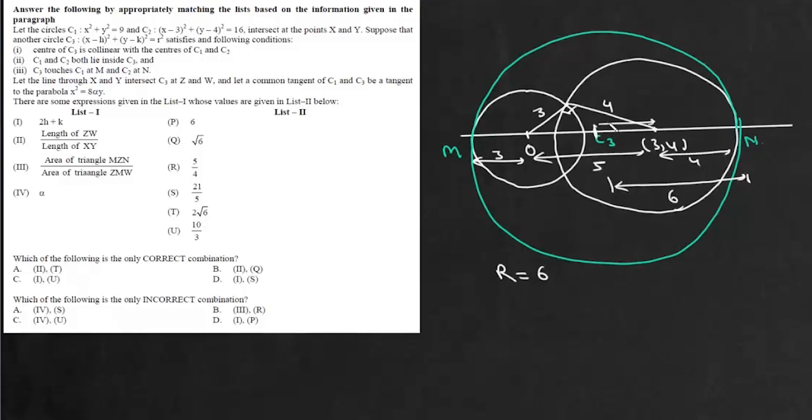Now this is 2 and this is 3. So this C3 it divides origin and 3,4 in the ratio 3 is to 2. So center of this circle C3 will be at 9 by 5 and 12 by 5. So for this third circle we have center and we also have its radius.